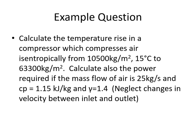Calculate also the power required if the mass flow of air is 25 kilograms per second, the specific heat capacity at constant pressure cp is 1.15 kilojoules per kilogram, and the ratio of specific heats gamma is 1.4. We're also told to neglect changes in velocity between inlet and outlet.